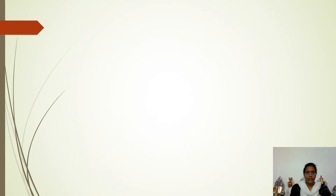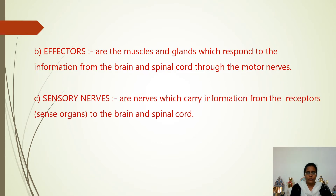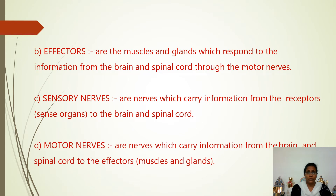The next important key term is effectors. Effectors are the muscles and glands which respond to information from the brain and spinal cord through the motor nerves. Sensory nerves carry information from the receptors to the brain and spinal cord. Motor nerves carry information from the brain and spinal cord to the effectors, that is the muscles and glands. These are the key terms involved in this chapter — without proper knowledge of them, you will not understand further.